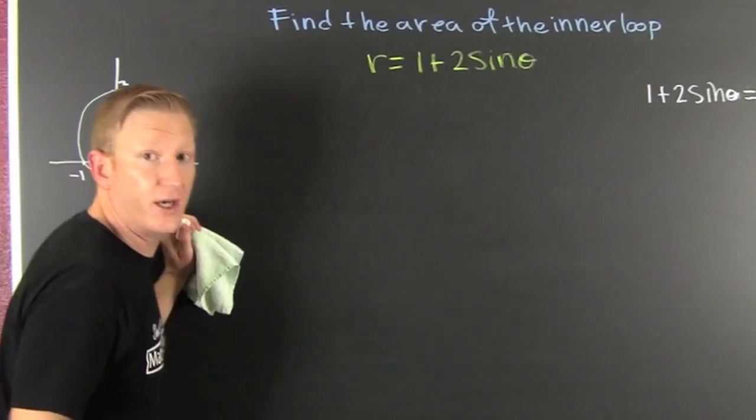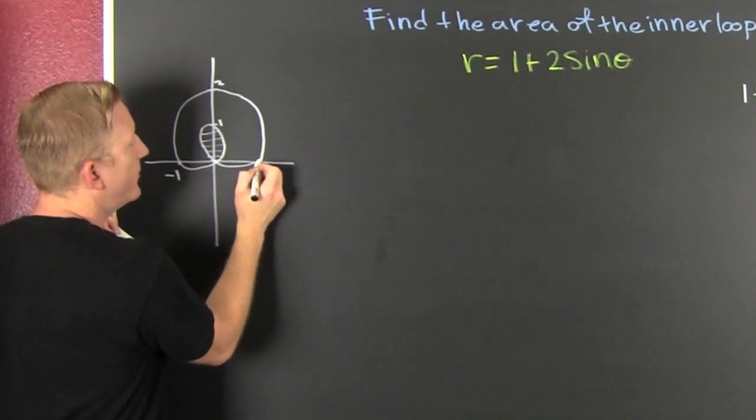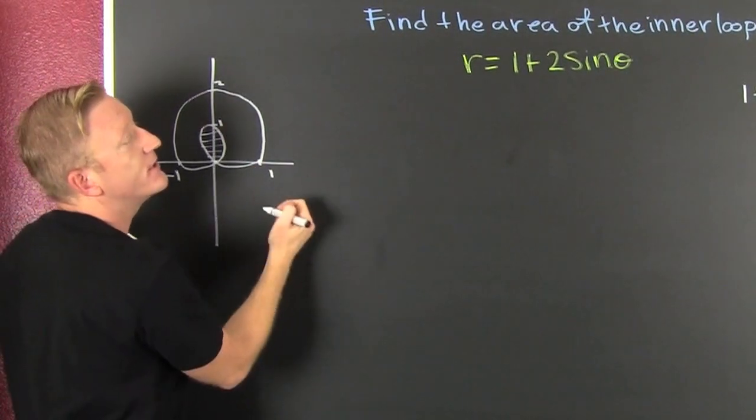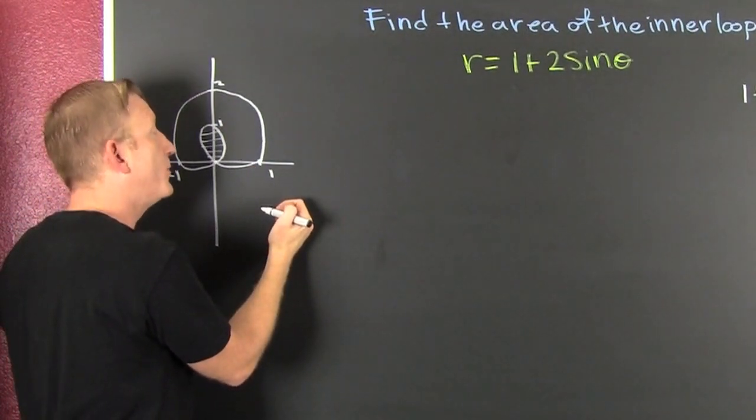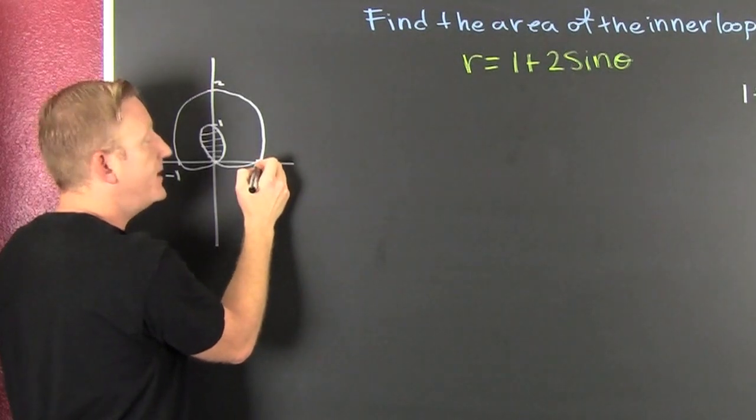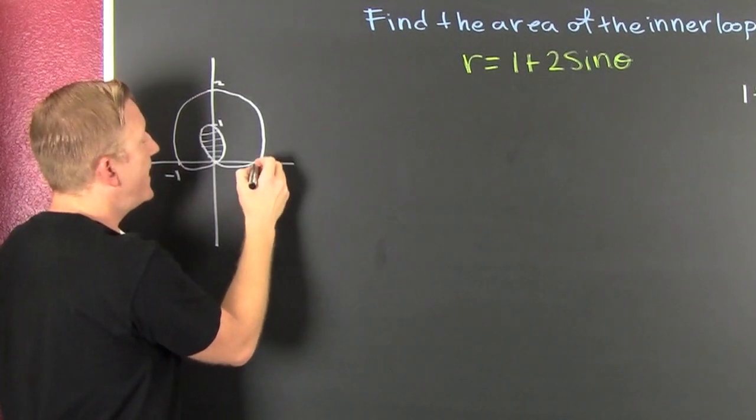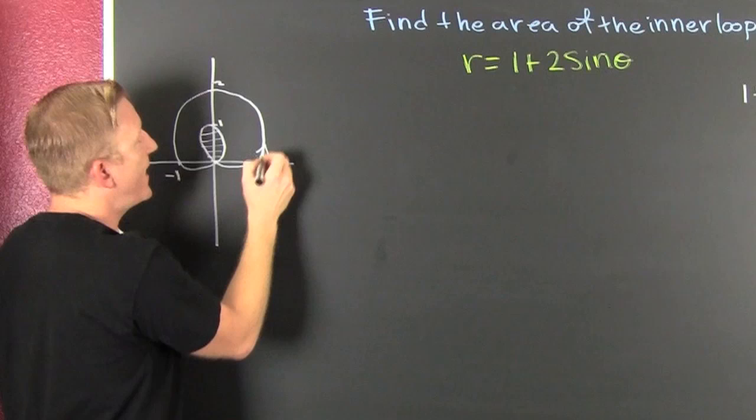Because when we're over here, we see that we start here at 1 because the sine of 0 is 0. 2 times 0 is 0 plus 1. I start here when theta is 0. And then I proceed in this fashion.